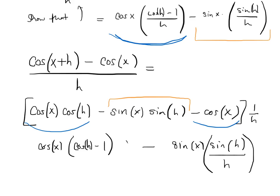And we can distribute the one over h. And for artistic effect, write it below the cosine h minus one. And you're done. And that's pretty much it.